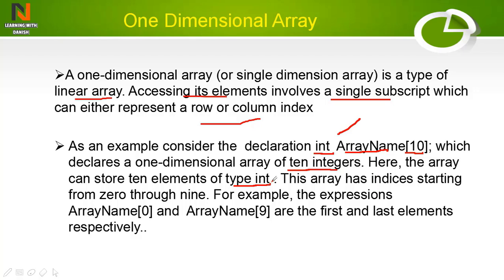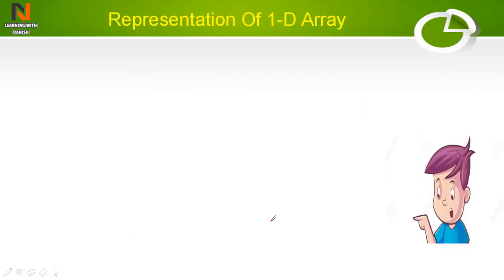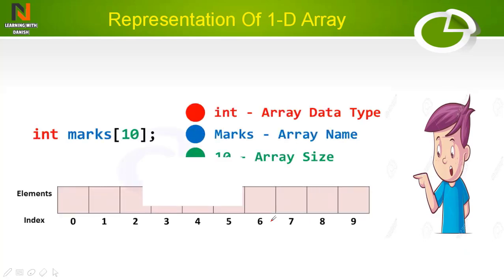This array contains 10 integers, all of type int. This array has indices starting from 0. As I mentioned in the previous video, the array index always starts from 0. This array contains 10 elements, so it has starting index 0 and ending index 9. The expressions arrayName[0] and arrayName[9] are the first and last elements.